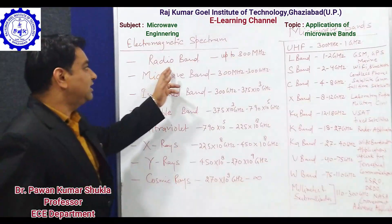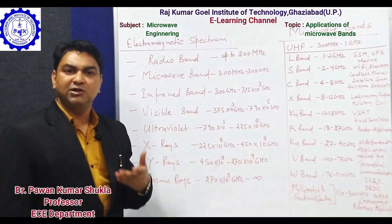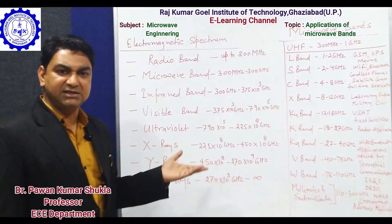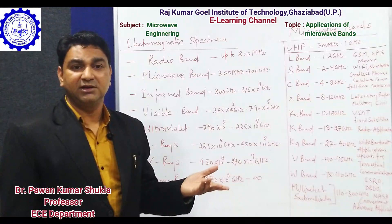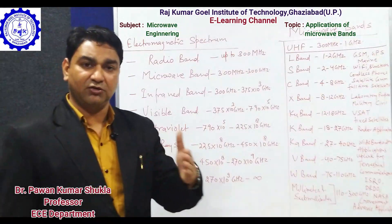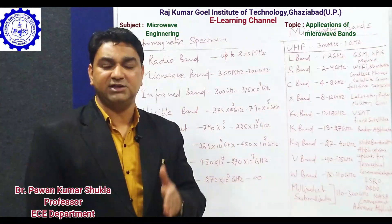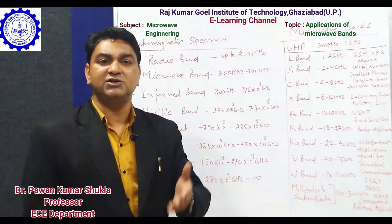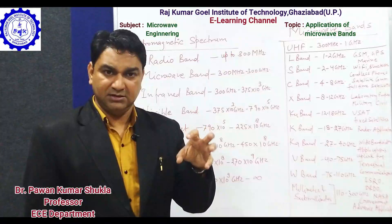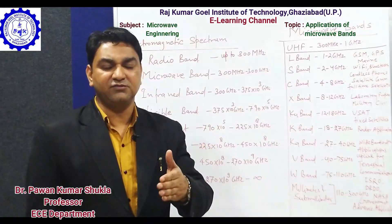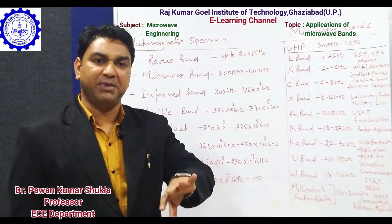First, we discuss the radio band, which is limited up to 300 megahertz. All low-frequency range applications are comprised within the different bands of the radio band. This radio band can be categorized under VLF, LF, MF, HF, and VHF. When the radio band reaches its highest spectrum — up to 300 megahertz — it is characterized by VHF.